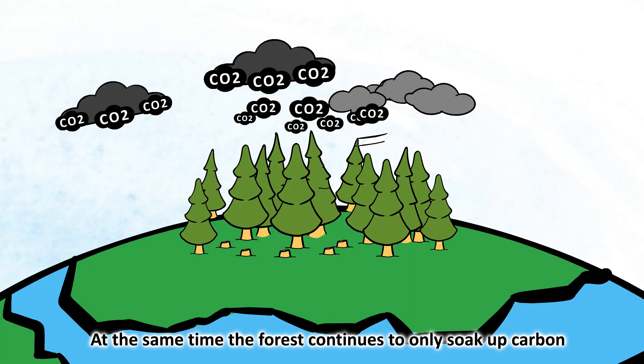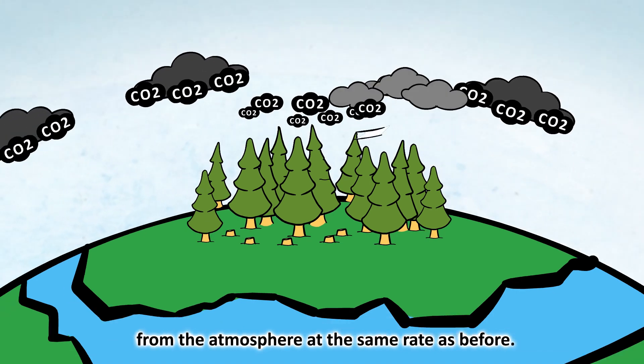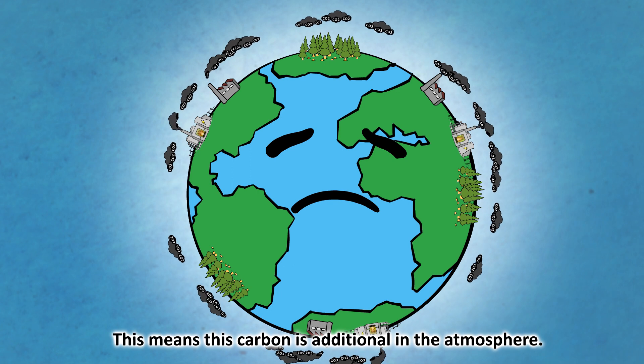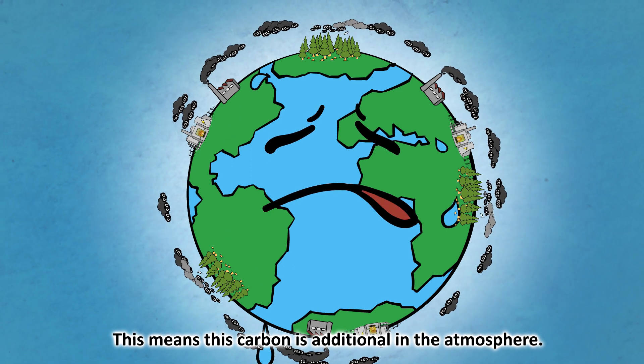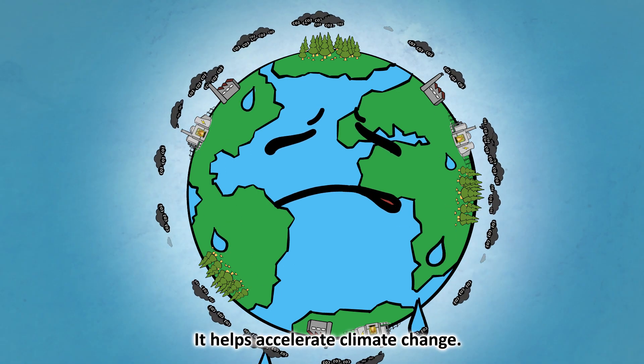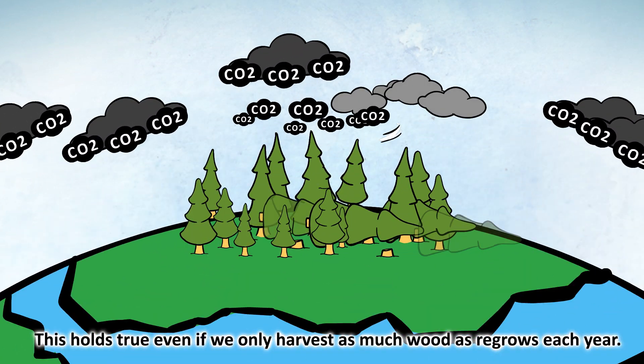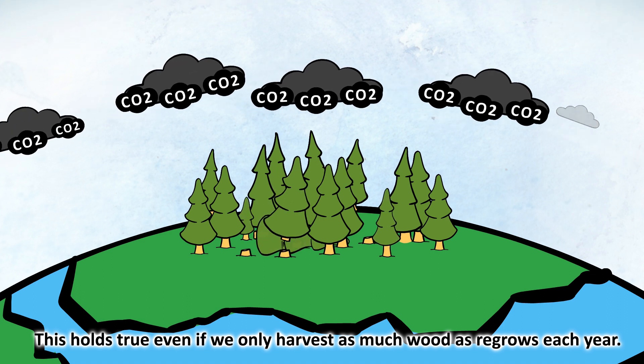At the same time, the forest continues to only soak up carbon from the atmosphere at the same rate as before. This means this carbon is additional in the atmosphere. It helps accelerate climate change. This holds true even if we only harvest as much wood as regrows each year.